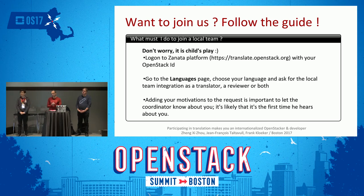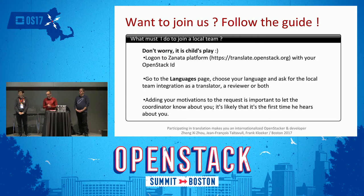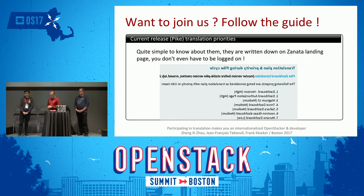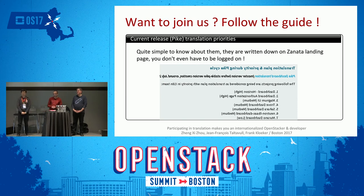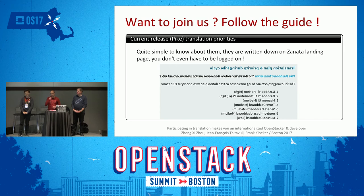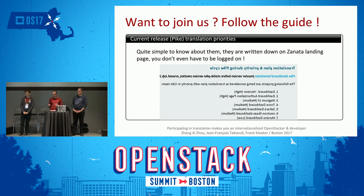One important thing is to add your motivation to the request, because it's likely that it's the first time the coordinator will hear about you. What are the current release translation priorities? How can you read the priorities of the current release cycle? It's quite simple — you just have to read the Zanata landing page, and you don't even have to be logged on.